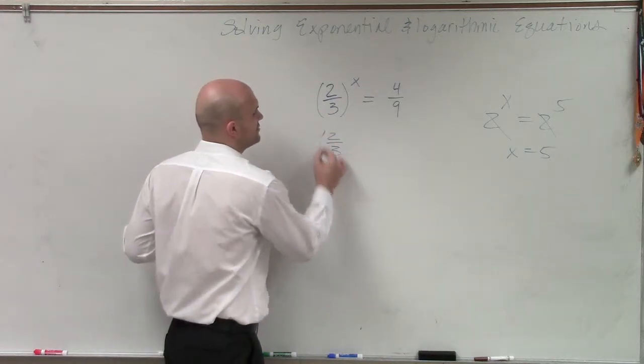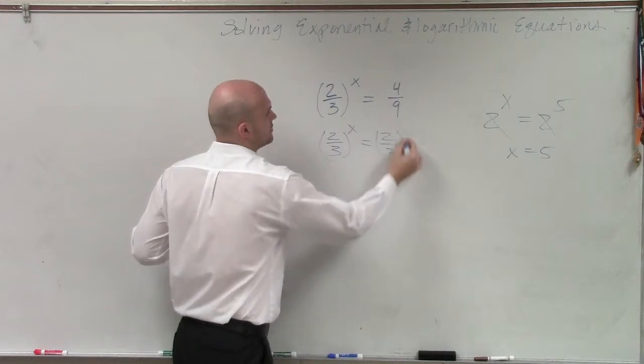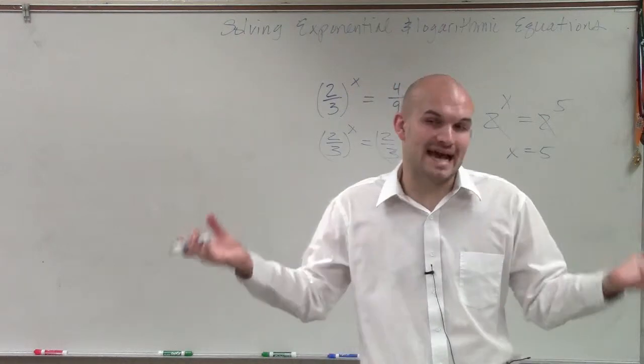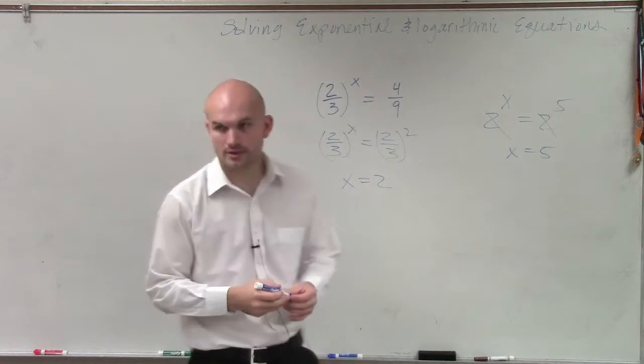We can rewrite this as (2/3)^x = (2/3)^2. Now we have them as the same bases, so we know that the exponents are going to be equal. So we can just say x equals 2. OK?